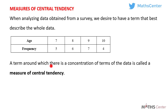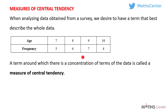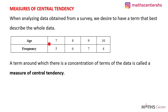A term around which there is a concentration of the data is called a measure of central tendency. So the term around which all the other terms in the data are clustered or concentrated is called a measure of central tendency. In this distribution, the age around which all the other ages are concentrated is known as the measure of central tendency.